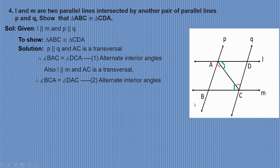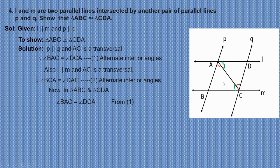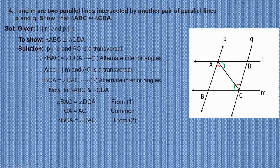Now in triangle ABC and triangle CDA: angle BAC equals angle DCA from equation 1, CA is common, and angle BCA equals angle DAC from equation 2. Therefore, triangle ABC is congruent to triangle CDA by the ASA congruence rule.